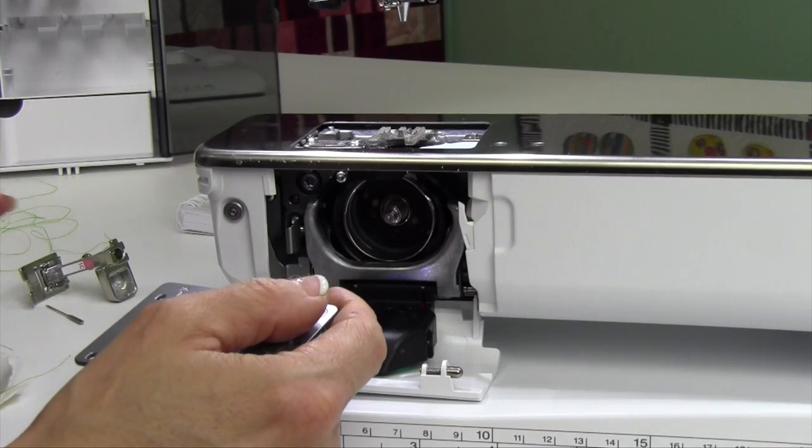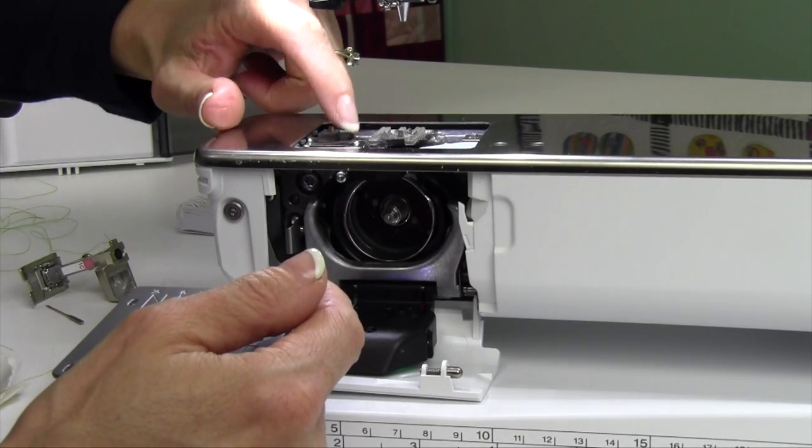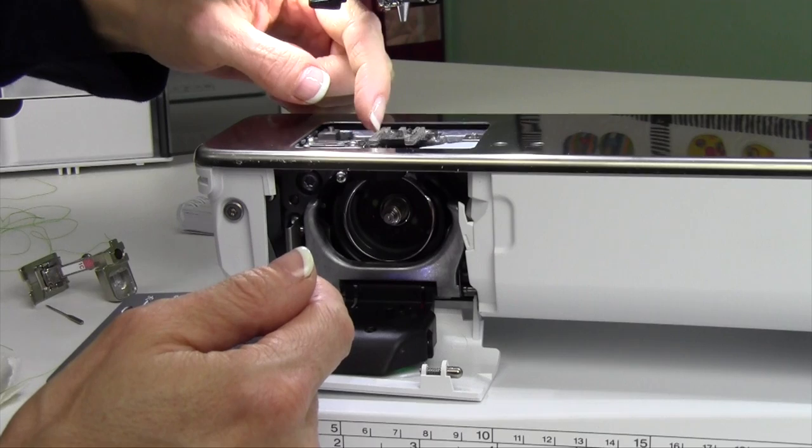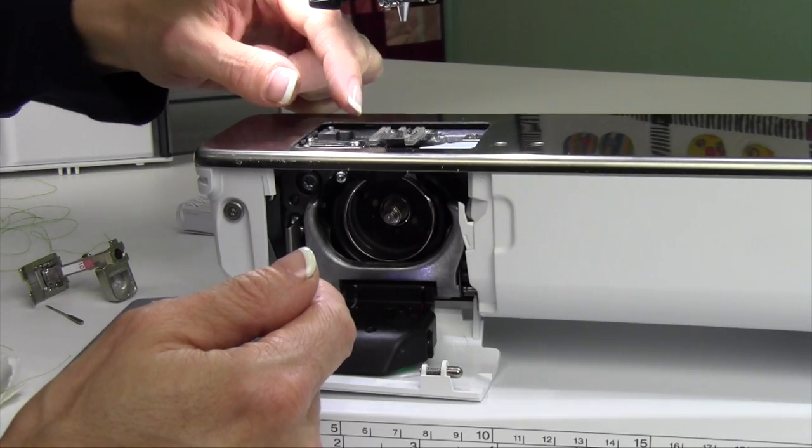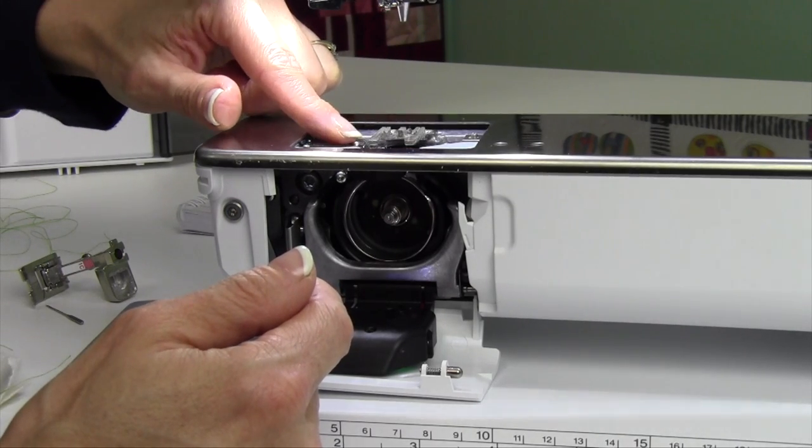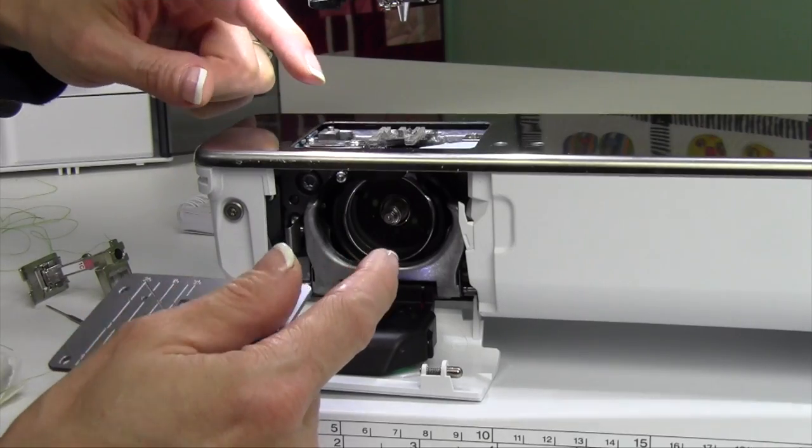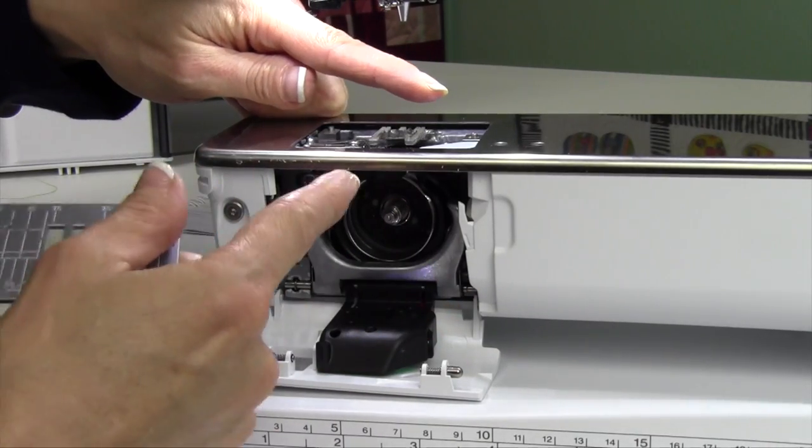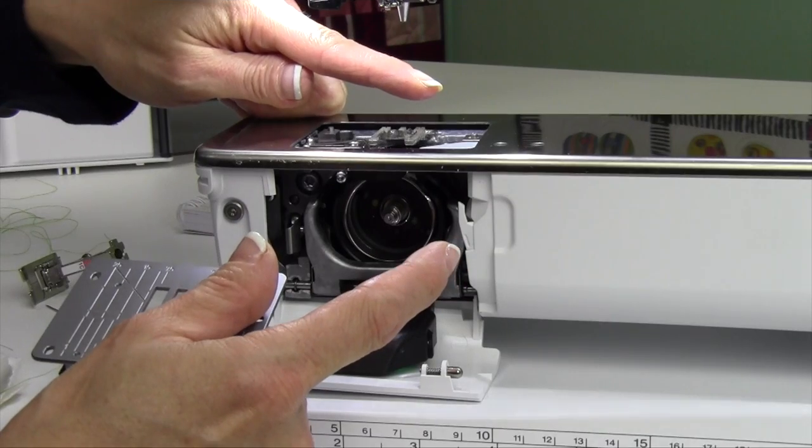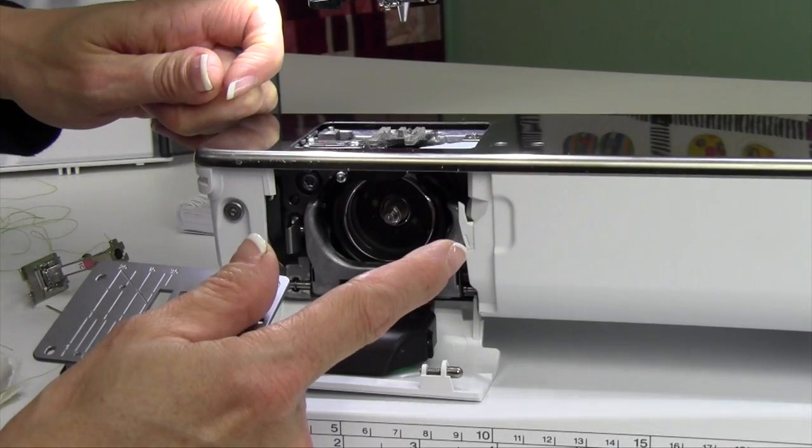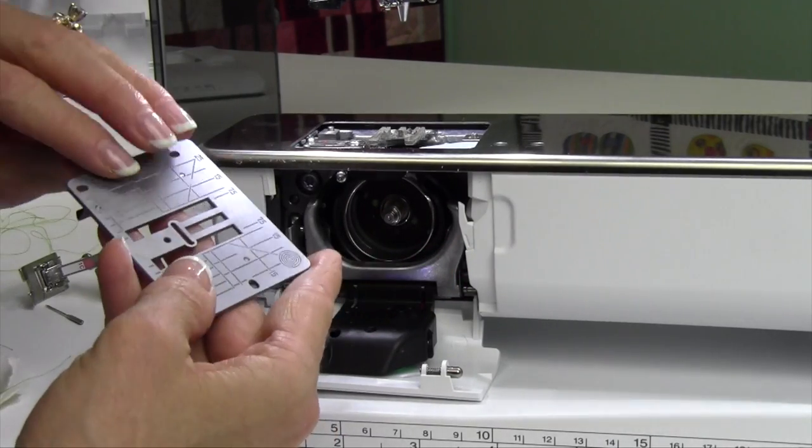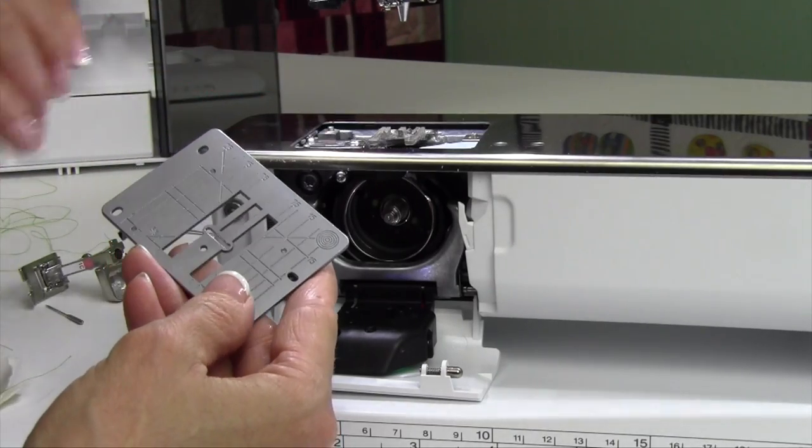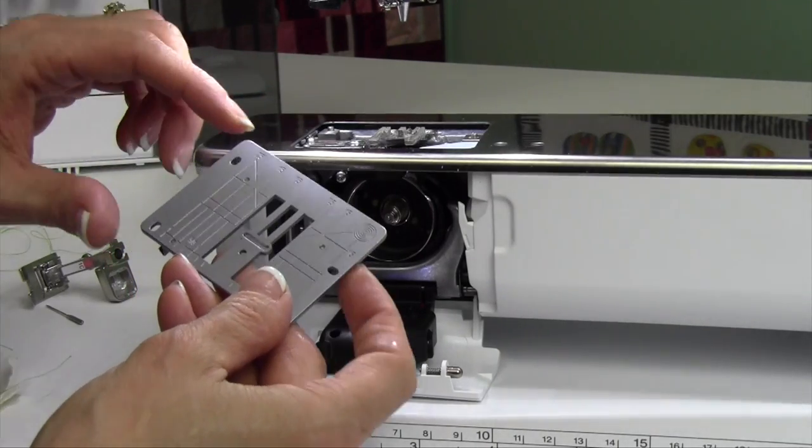Now, we're going to do one other separate video on cleaning the thread catcher here. That's the little thread cutter, and sometimes there's some threads that need to be cut. There's a little sequence you do with the setup menu. You're going to push something on the screen, and then it's going to expand, extend. You're going to clean it out, and then you're going to touch something else on the screen, and it will go back to where it needs to be. Like I said, that's going to be a separate video all together. Make sure that if you're starting to see some threads down there, you need to remove that. There is a specific way to do that.